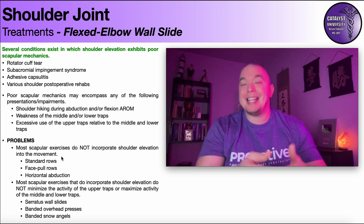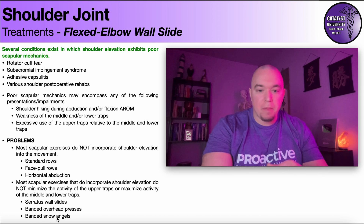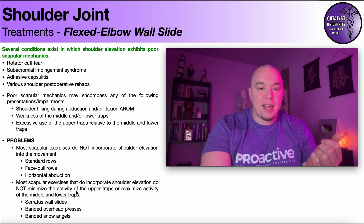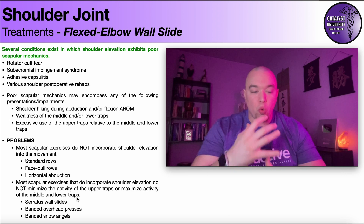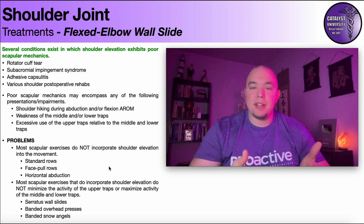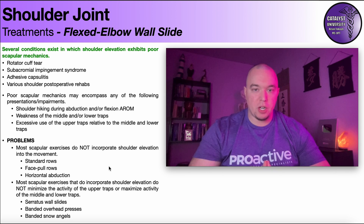Well, let's do an exercise that does incorporate shoulder elevation — like serratus wall slides, banded overhead presses, or banded snow angels. The problem with these is that even though they incorporate shoulder elevation into the movement, they're not minimizing the activity of the upper traps and they're not maximizing the activity of the middle and lower traps. So they're not helping to regain that force couple as much as we would like. I'm not dissing these exercises — they're excellent and I give them all the time. But what happens when you're just not able to correct that person's scapular compensation?